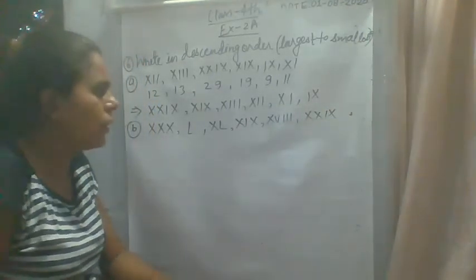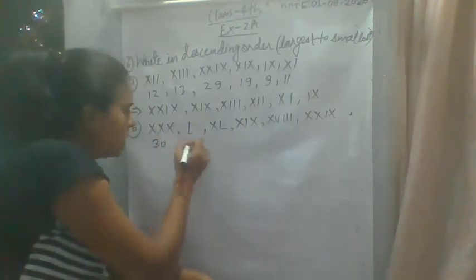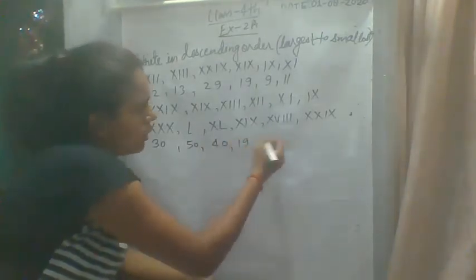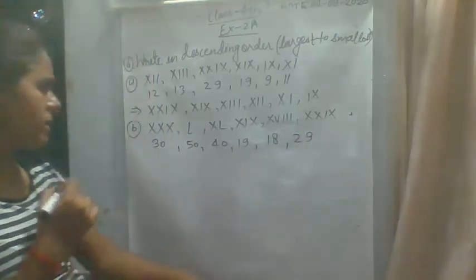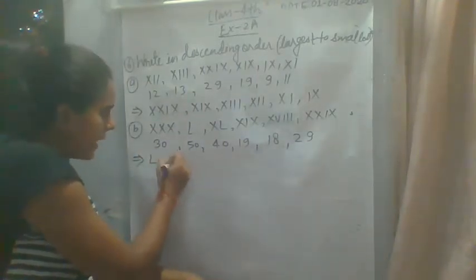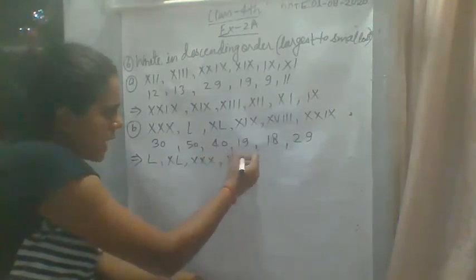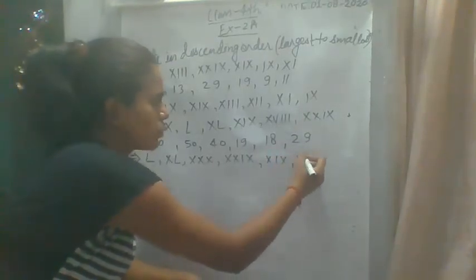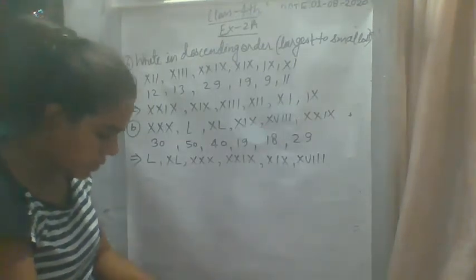First we know what we have written. We have written numbers. XXIX is 29, XIX is 19, and then XVIII. So in this way you have written question number B.